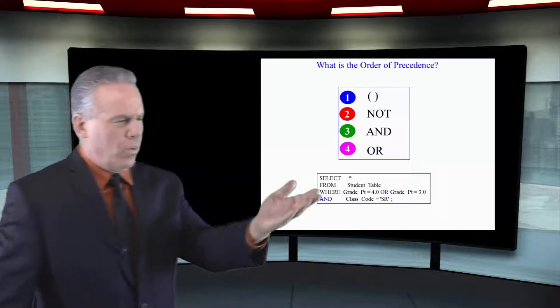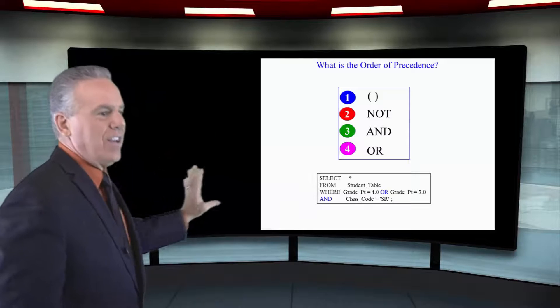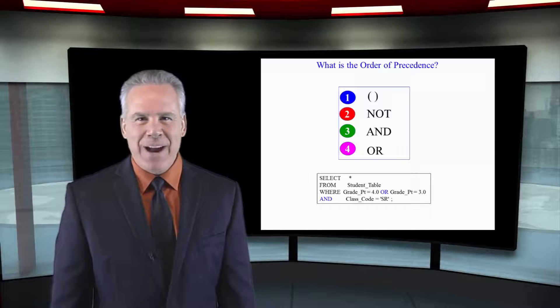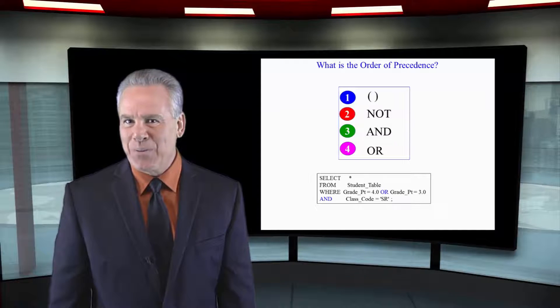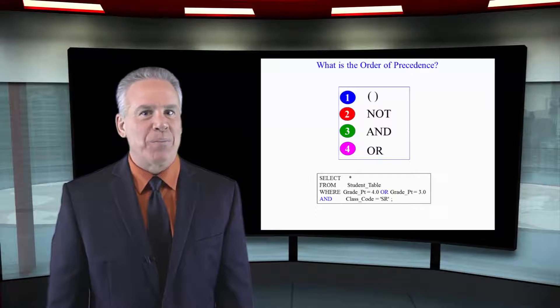So were there anybody with a grade point equal to 3.0 and a class code of senior or did anybody have simply a 4.0? That's why two rows came back and we're going to fix that with some parens.